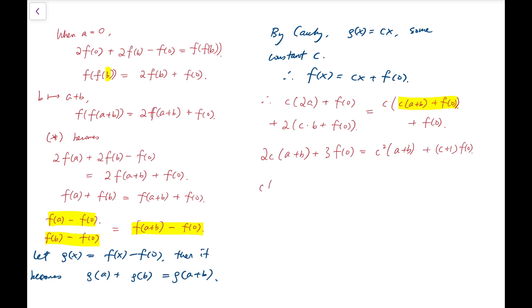I'm going to put everything on one side. That becomes c times c minus 2 times a plus b plus c minus 2 times f of 0 equals 0. I can factorize with c minus 2 as the common factor. So this product is 0. Here we have 2 cases. The first one is that c is 2, then things become very easy.